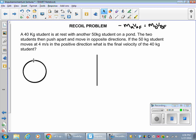I'm gonna go ahead and start. 40 kilogram student is at rest with another 50 kilogram student on the pond, so they're together. Here's my before, here's after. The total momentum on this side of the equation is going to be zero, and I'm only going to have final values that are not zero in the final side.